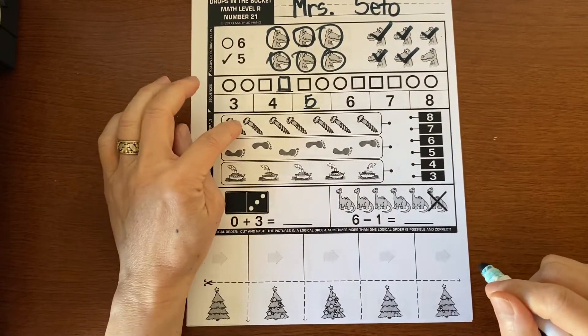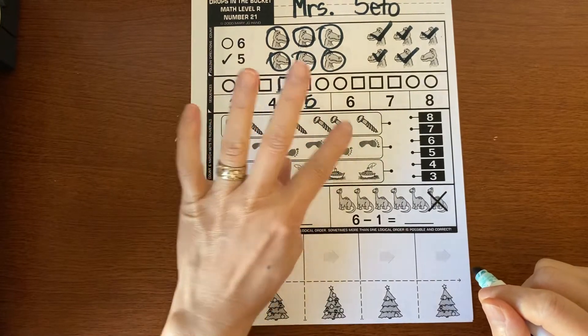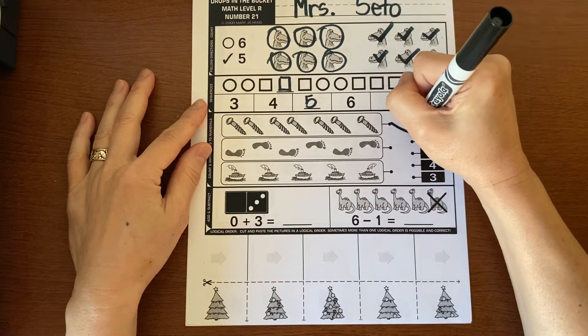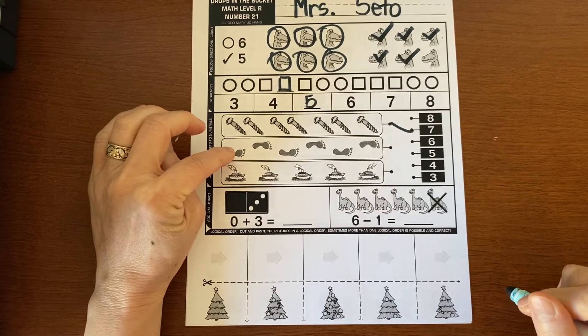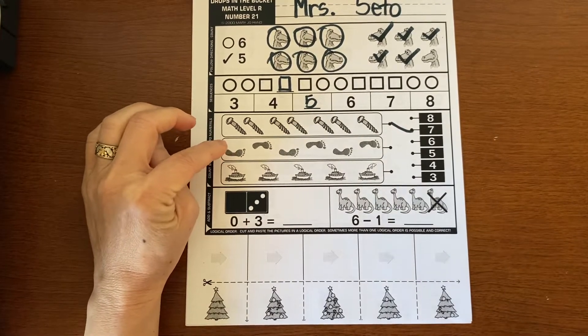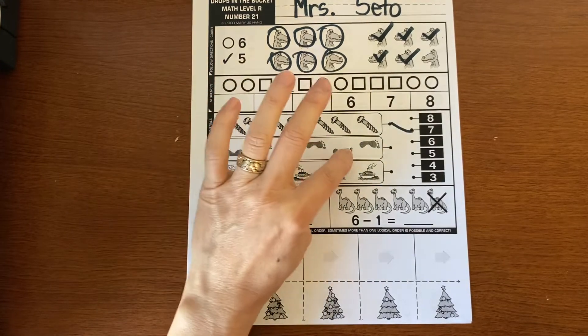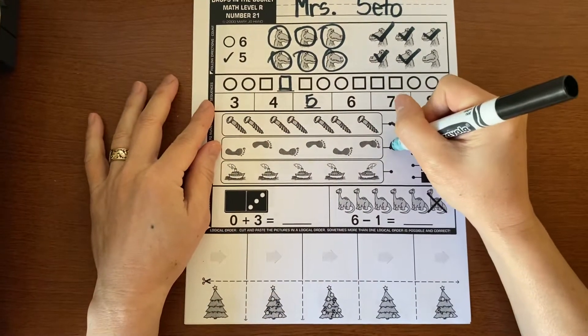Let's count the screws. One, two, three, four, five, six, seven. Draw a line to seven. The footprints. This reminds me of a beach. When you go to the beach, do you ever see your footprint? It looks like this. One, two, three, four, five, six. Six.